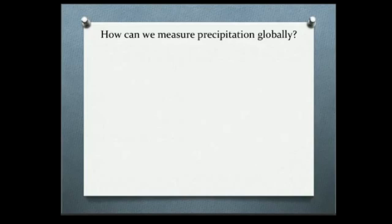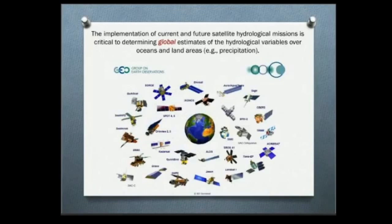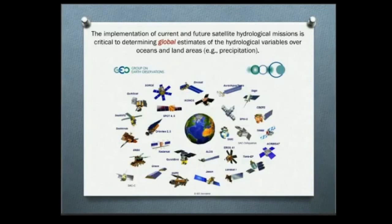Can we measure precipitation globally? And if we can, how? The answer, given the title of this talk, is pretty easy: satellites. We can measure it from space. These are the satellites that are now orbiting and watching the Earth. We really need to improve what we have now and think ahead for future missions if we want to determine the global hydrological cycle, and precipitation is a major component of it.